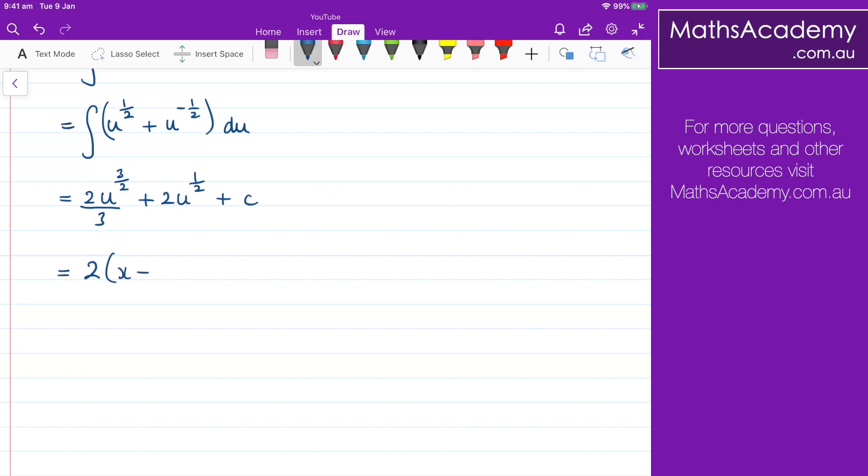So we have equals, we've got 2 times x minus 1 to the power of 3 over 2, and that's all over 3. Plus 2 times x minus 1 to the power of 1 half, plus the constant of integration.